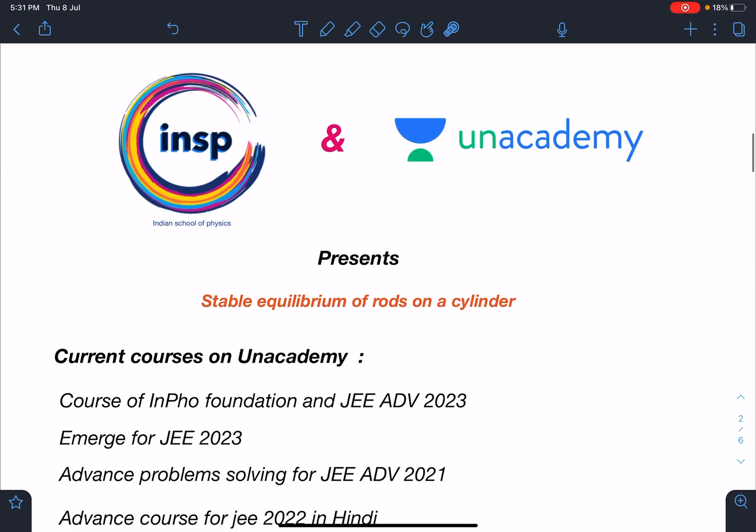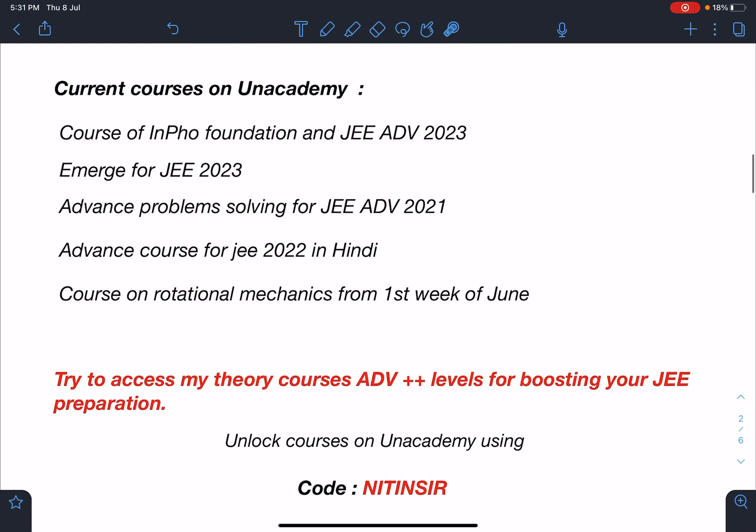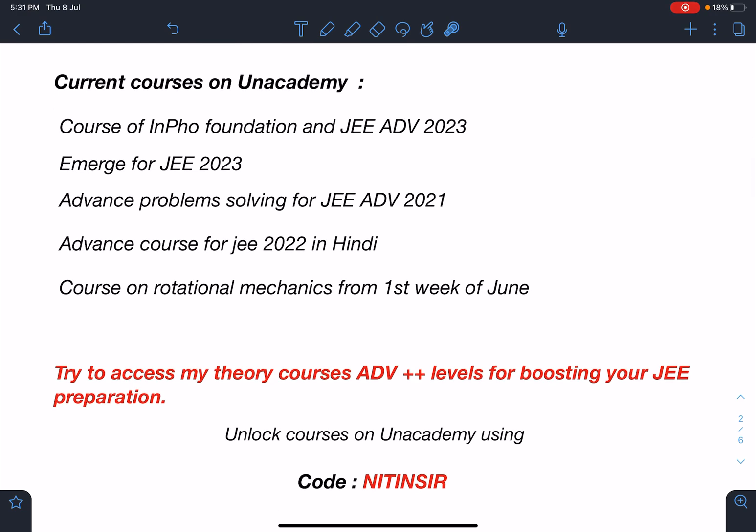This video is brought to you by Indian School of Physics and Unacademy together. The name of this problem is stable equilibrium of rods on a cylinder. My current courses on Unacademy are course of INPHO foundation and for JEE Advanced 2023 and Emerge for JEE 2023. Kinematics and work, power, energy and circular motion will be starting in these batches.